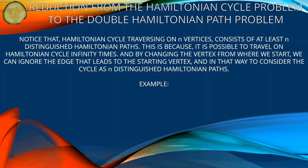Notice that a Hamiltonian cycle traversing n vertices consists of at least n distinguished Hamiltonian paths. This is because we can travel the Hamiltonian cycle and by changing the vertex from which we start, we can ignore the edge leading to that starting vertex, thereby considering the cycle as a distinguished Hamiltonian path.